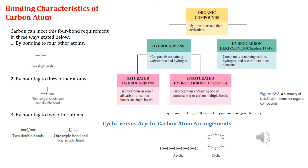Let us proceed to how organic compounds are classified. The field of organic chemistry encompasses the study of hydrocarbons and hydrocarbon derivatives. A hydrocarbon is a compound that contains only carbon atoms and hydrogen atoms, and there are thousands of hydrocarbons known today. A hydrocarbon derivative is a compound that contains carbon and hydrogen and one or more additional elements, such as oxygen, nitrogen, sulfur, phosphorus, fluorine, chlorine, and bromine. Millions of hydrocarbon derivatives are known.